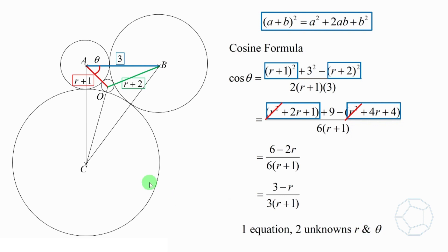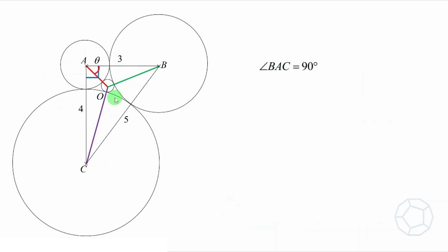Well, we need another equation to solve it. What about using another triangle? Right, let's look at triangle OAC. Because we have proved that angle BAC is equal to 90 degrees, therefore, angle OAC is equal to 90 degrees minus theta.